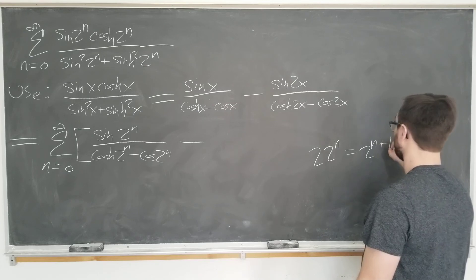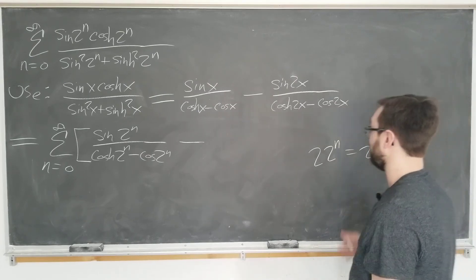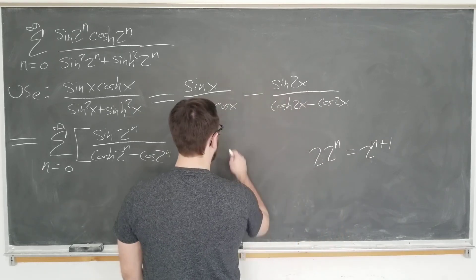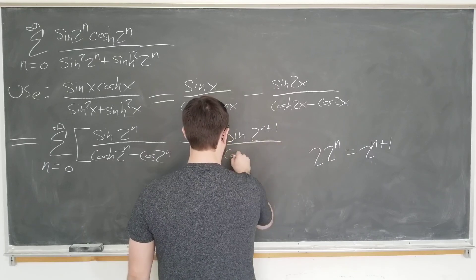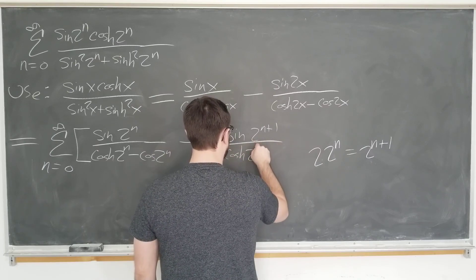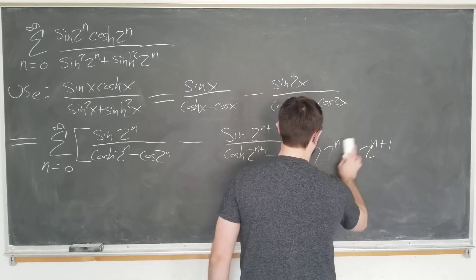minus the same thing here but with a factor of 2 out in the front. So we have 2 times 2 to the n is equal to 2 to the n plus 1. This is the secret to why this works. So this becomes sine of 2 to the n plus 1 over cosh of 2 to the n plus 1 minus cos of 2 to the n plus 1.